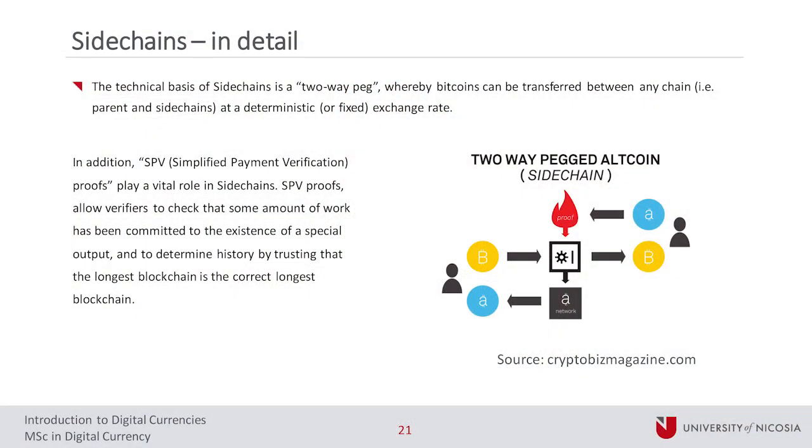The next question comes from Vincent and is about simplified payment verification proofs in sidechains. Vincent asks: I would like to understand better how they work. Who are the verifiers and what is the special output mentioned in slide 21? Are the verifiers the miners? Are SPV proofs only used in the two-way peg model?